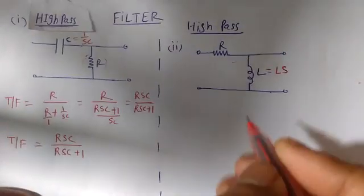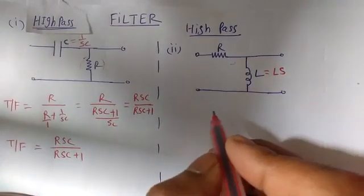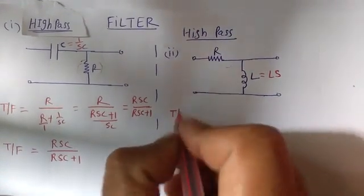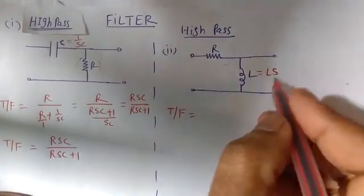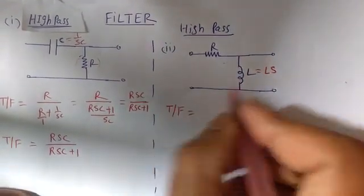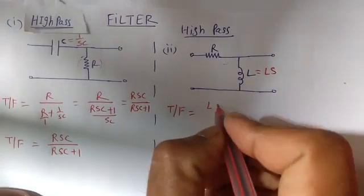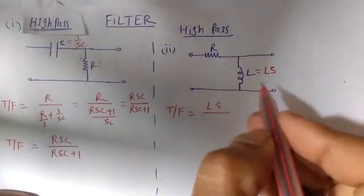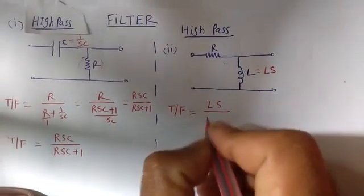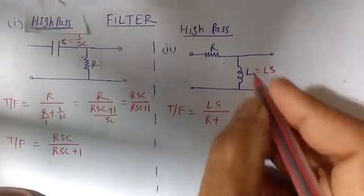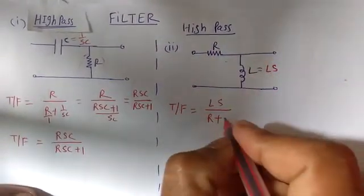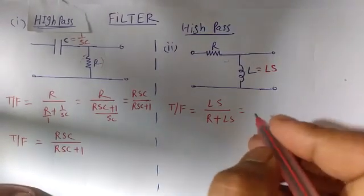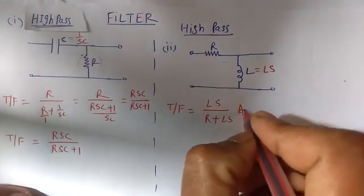In the same way, we will write the transfer function of the high pass filter with an inductor. The transfer function is output impedance, which is LS, upon total impedance. Total impedance is R plus LS, since these two are in series. So the transfer function is LS upon R plus LS.